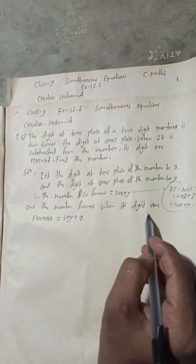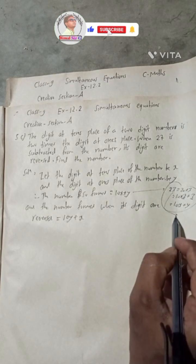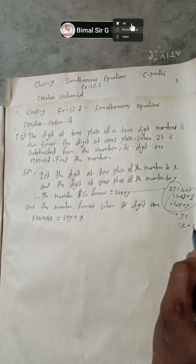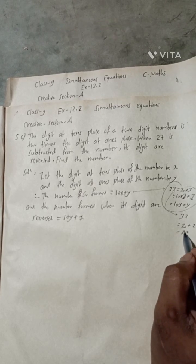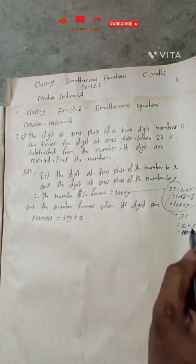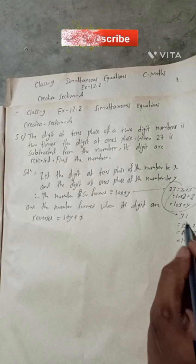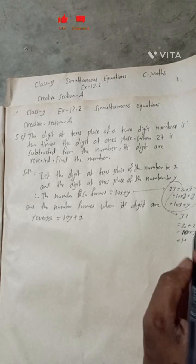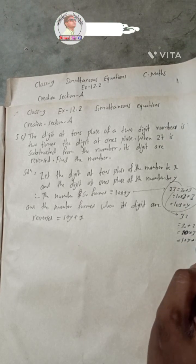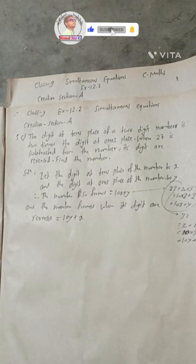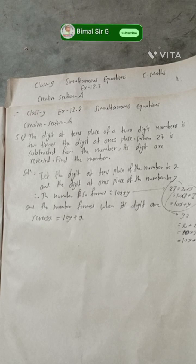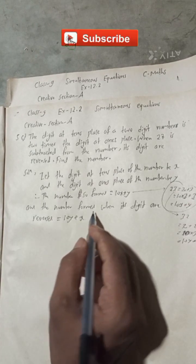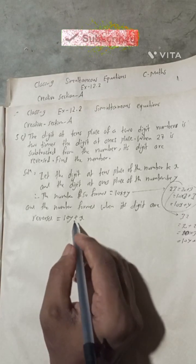For example, the reverse of 23 is 32. The number 32 can be written as 30 plus 2, which is 10 into 3 plus 2. Since the original tens digit was x (which is now y) and the original ones digit was y (which is now x), the reversed number is 10y plus x. This is the number formed when its digits are reversed.